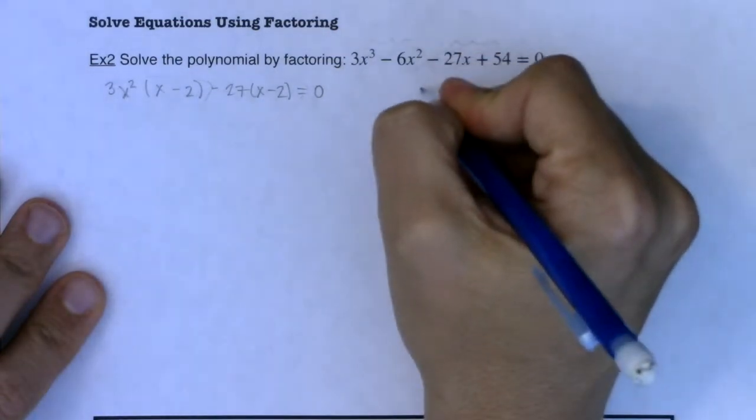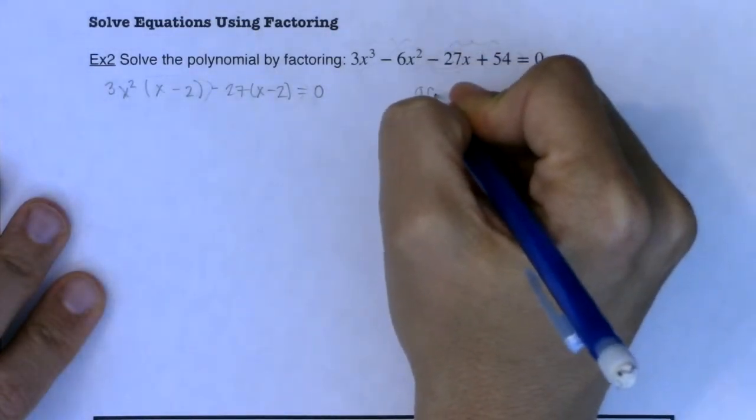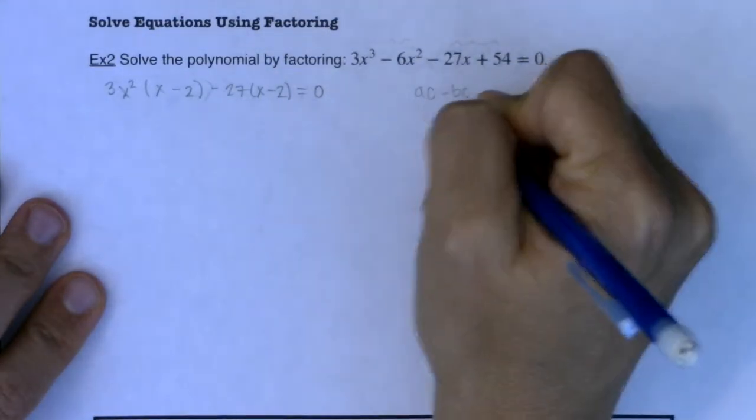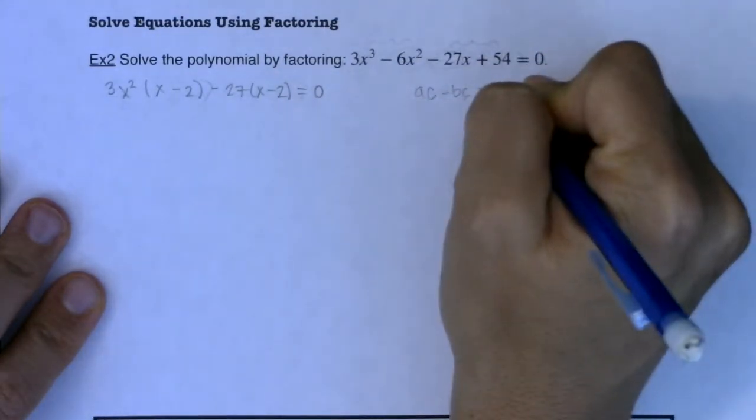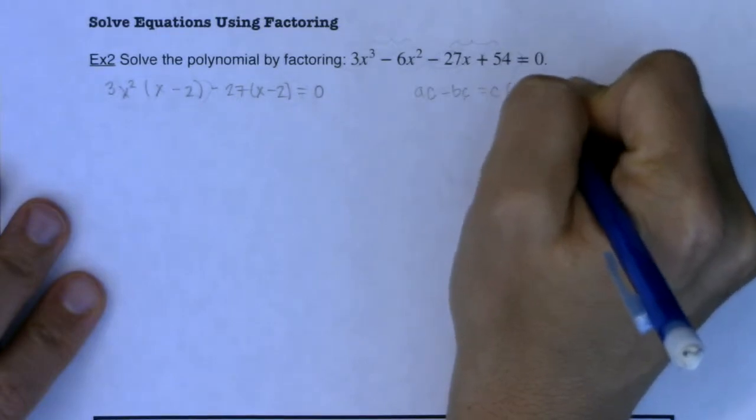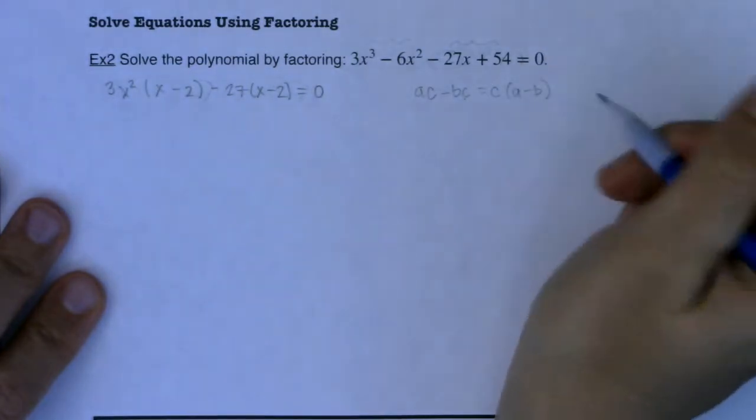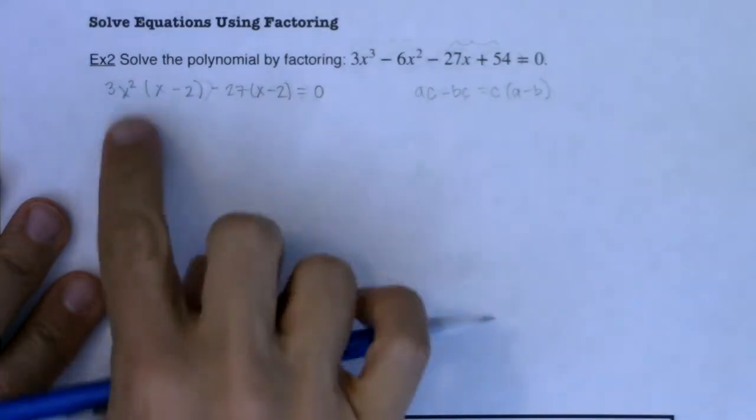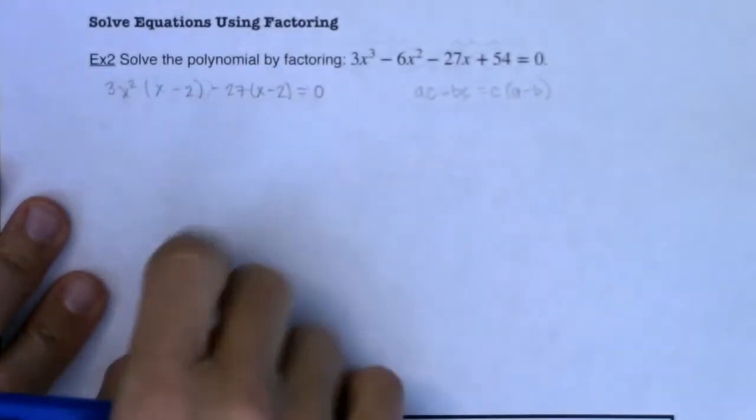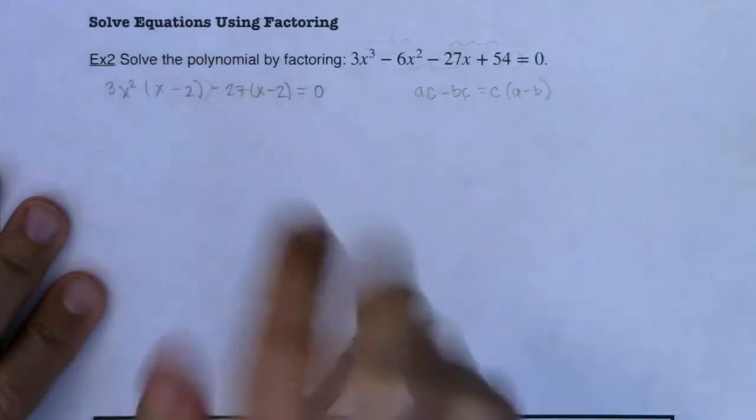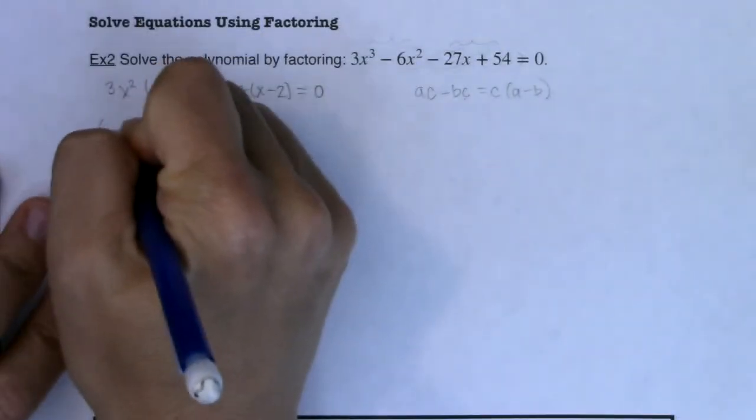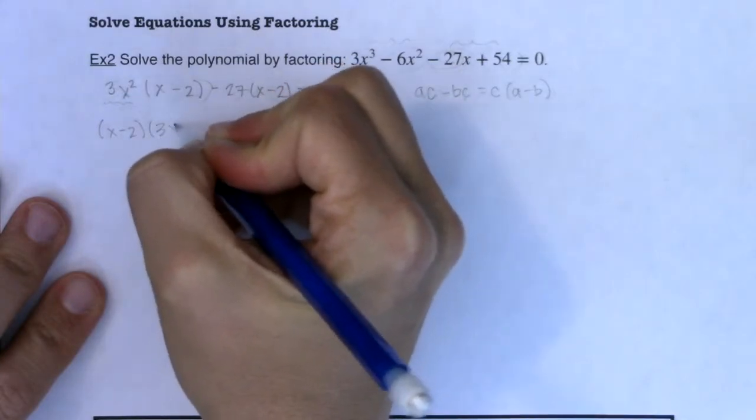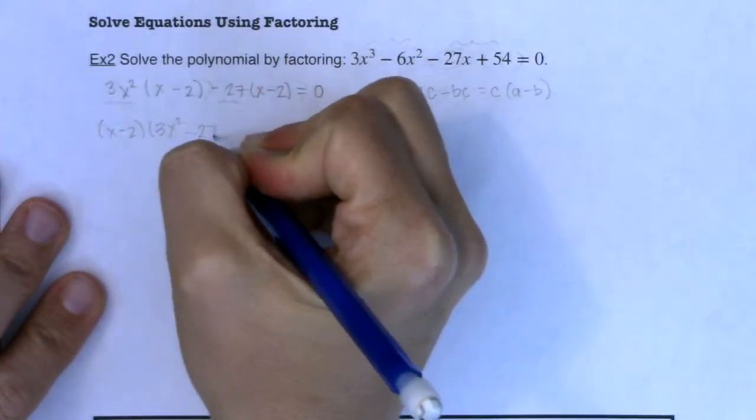Alright and just as a little side note if I had a times c minus b times c, if I had something like that, if I had this binomial, you would say, well hey Ms. A, I can take out the c and I'll get left with a minus b. Alright now the same thing is happening here between these two terms, between this entire term and this entire term, what do they have in common? x minus 2. So I'm going to factor that out and what am I left with? 3x squared and then minus 27.